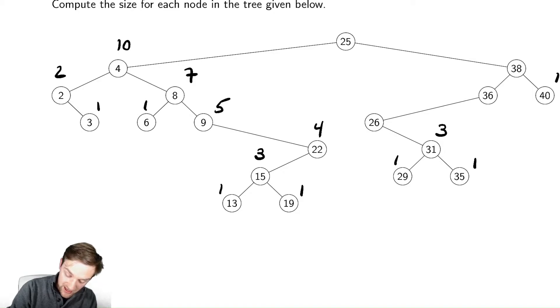Going back over to the right, we have 4 for the size of this node, 5 for the size of that node, and 7 for the size of that node, making the total tree of size 18.